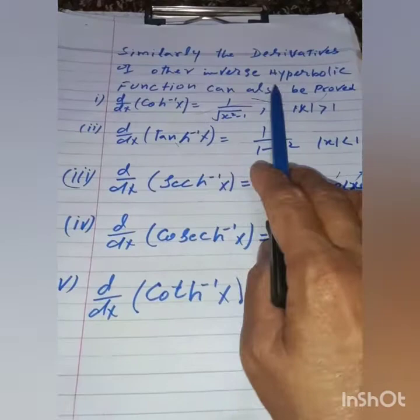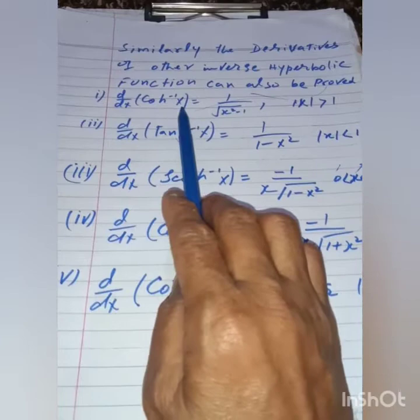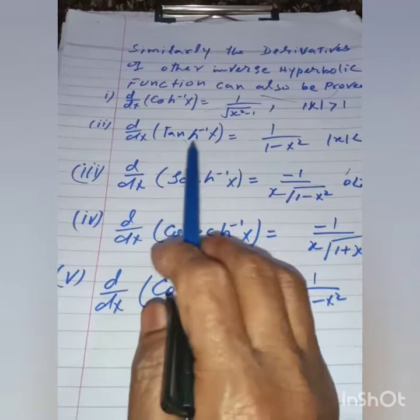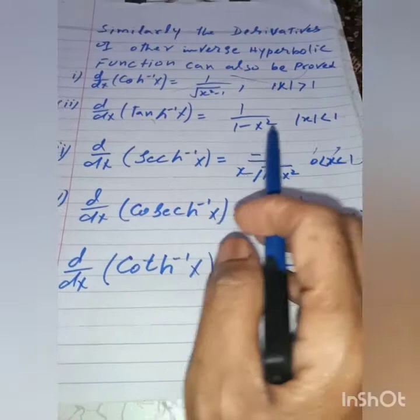For example, d/dx of cosh⁻¹(x) will be equal to 1 over √(x²−1), where |x| > 1. Similarly, d/dx of tanh⁻¹(x) is equal to 1/(1−x²), where |x| < 1.